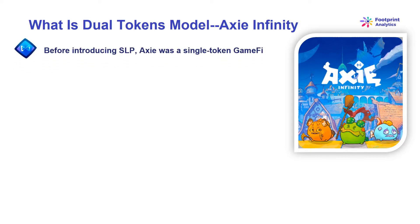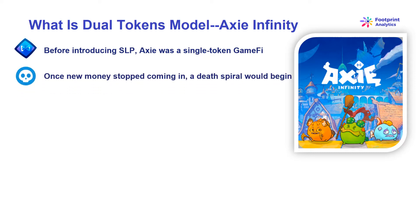Before introducing SLP, Axie was a single token game fi, where players input USD and receive the game token, AXS. With tremendous user growth and money from many PE funds supporting the market, Axie successfully ran on just one token for over a year. However, it was not difficult for Axie to realize how important new users were for the project. Once new money stopped coming in, a death spiral would begin.